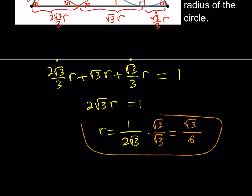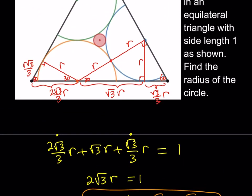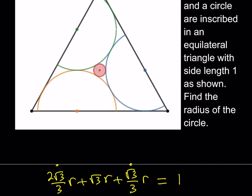So root 3 over 6 is the radius for the semicircle. Now I'd like to use that expression to calculate the radius of the circle in the middle. Since we already know r, we can go ahead and erase some of this and clean it up a little bit, then start fresh.